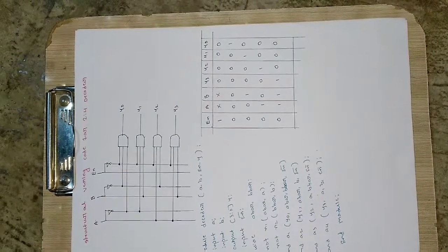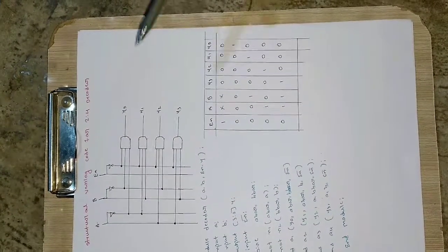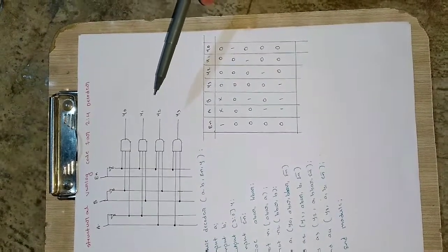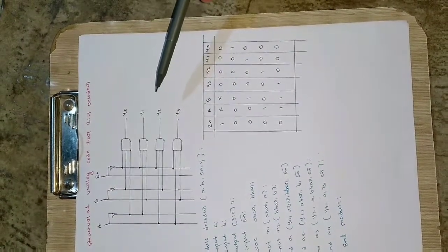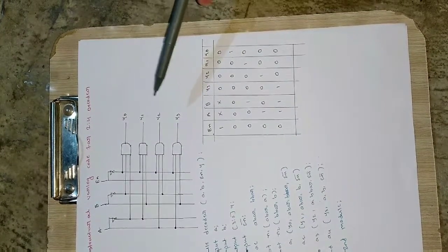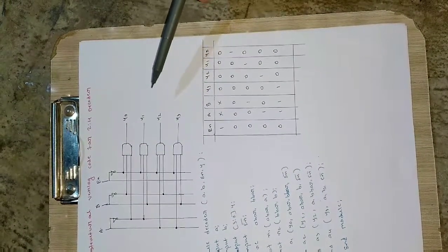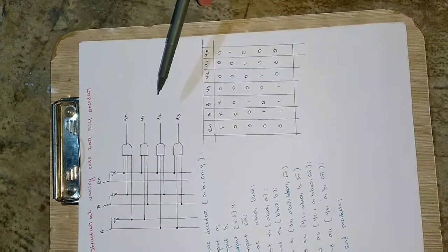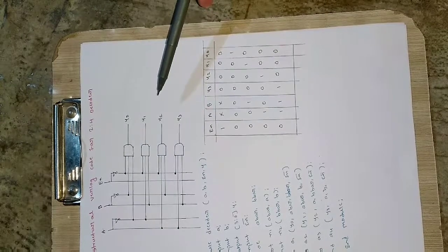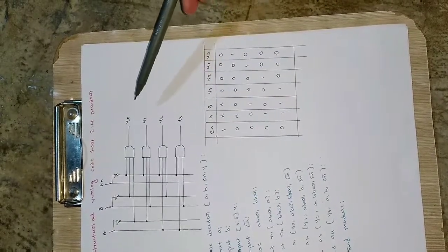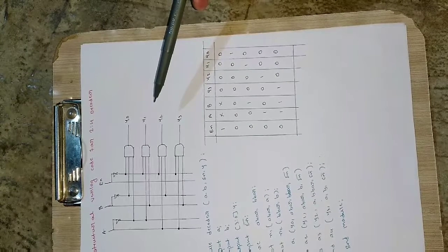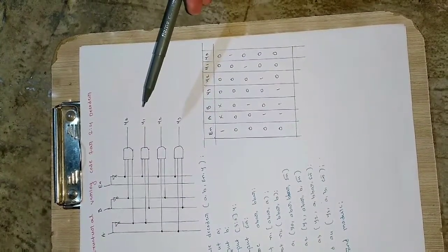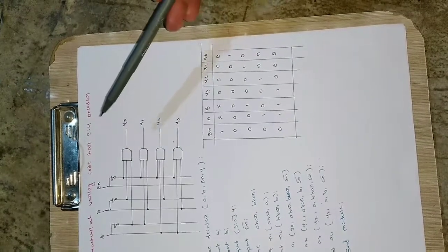Coming to the gate-level description of the 2-to-4 decoder: as I said earlier, if you want to write the structural code for any boolean expression or any circuit, you need to first draw the gate-level description. Only then will it be easy to write the code. That's why I have written the gate-level implementation for the 2-to-4 decoder.